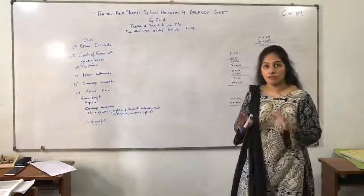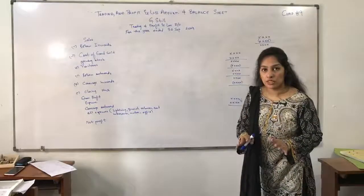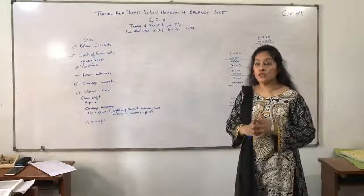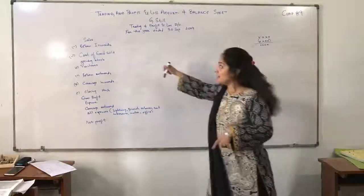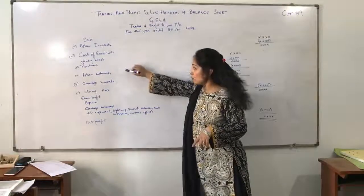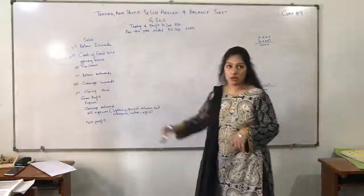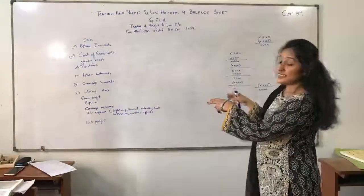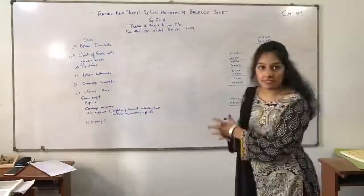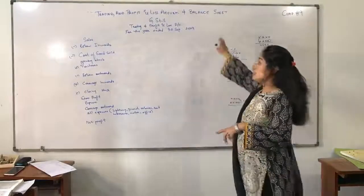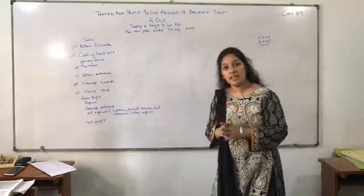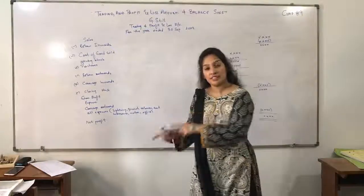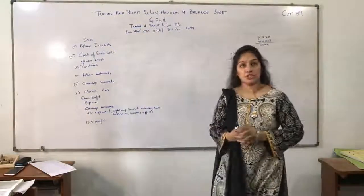This is the standard pattern of the trading profit and loss account with further extension using four different titles: Return Inwards, Return Outwards, Carriage Inwards, and Carriage Outwards, each entered under different headings. As for the balance sheet, it will remain the same as studied in chapter 8. Thank you so much.